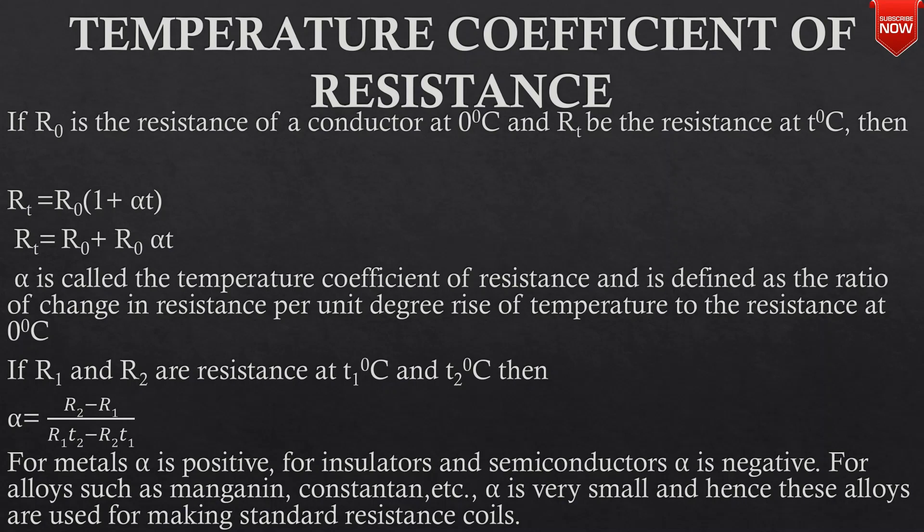For alloys such as manganin and constantan, alpha is very small. Hence, these alloys are used for making standard resistance coils.